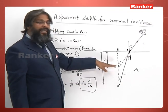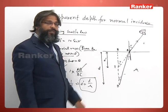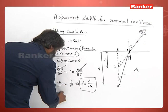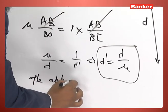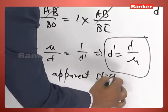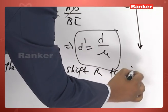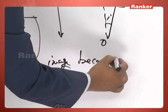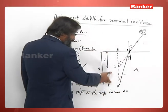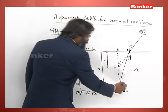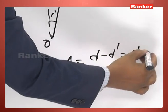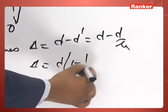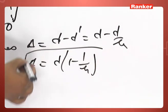Since d' = d/μ, the image is raised up. The apparent shift δ is the distance the image moves upward: δ = d − d' = d − d/μ, which gives δ = d(1 − 1/μ). This is the apparent shift for normal incidence at this refracting surface.